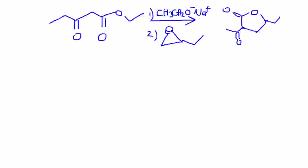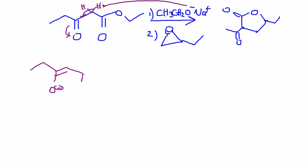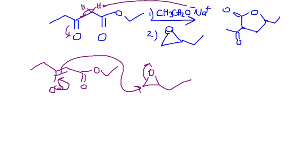Let's go over some mechanistic questions. You're given a beta-keto ester and you have to treat it with a base. The first step is to look for the acidic hydrogens, which gives you the enolate with a negative charge. The next step is to treat it with an epoxide. Recall that an enolate can attack any carbon with a positive center. Since this is done in basic media, the ring will open from the least substituted side — if it were acid, it would be the most substituted.